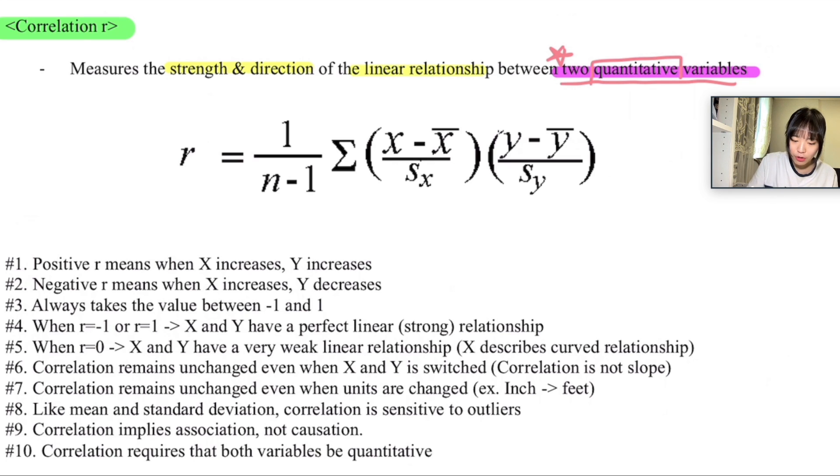And this is how you're going to compute your value for correlation r. So it's equal to 1 over n minus 1, sigma of (x minus the average of x) over (standard deviation of x) times (y minus y average) over (standard deviation of y).